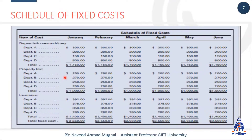Toh ye hum log ne us ko distribute bhi kar diya, aur hum log ne har ek depreciation ko distribute kar diya. Isi tariqe se property taxes ki example ho sakti hai, aur hum log ne us property taxes ko distribute kar diya among the different departments, on the basis of area ho sakti hai, ya on the basis of any logical reason ho sakti hai. Toh wo hum log ne uske mutabik in ki distribution of expenses kar sakti hai. Phir uske baad insurance expense ho sakti hai - insurance bhi aapki worth of the assets ho sakti hai.